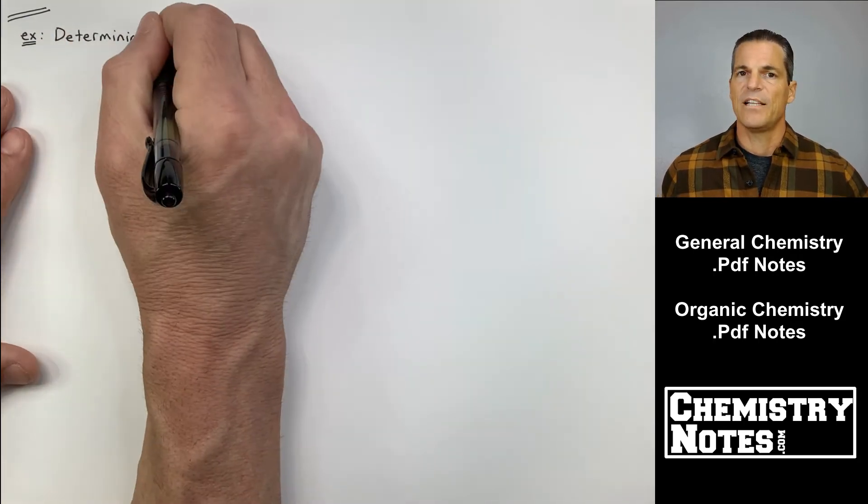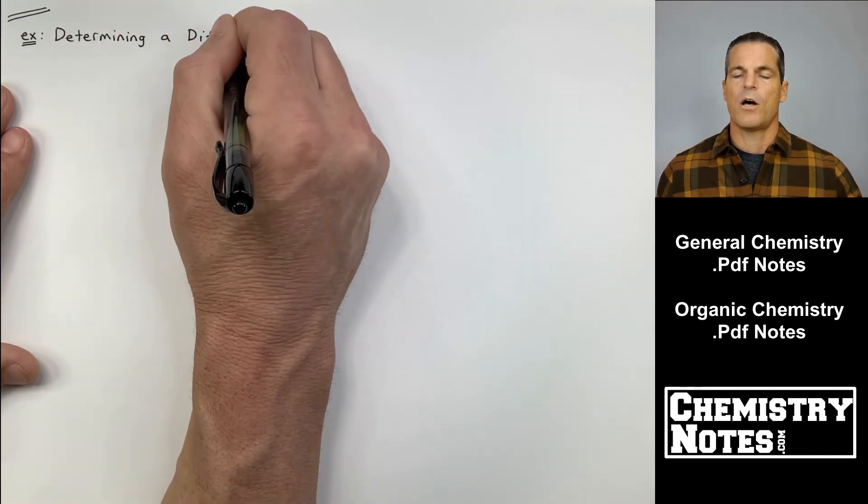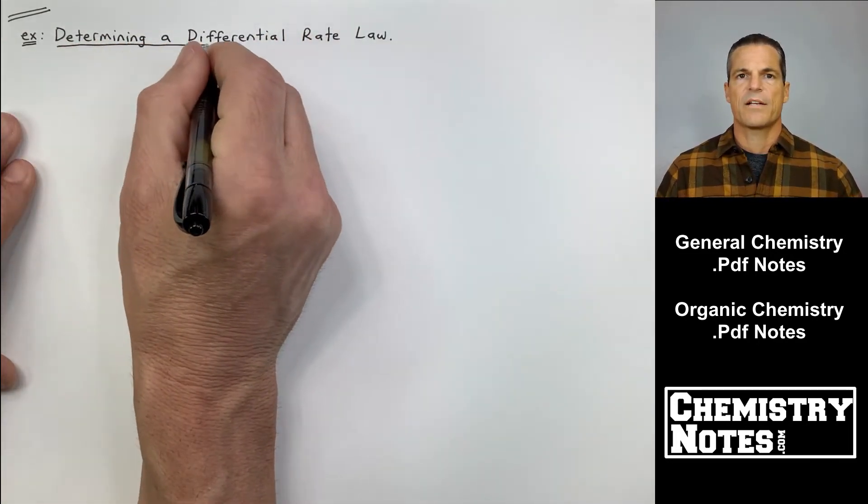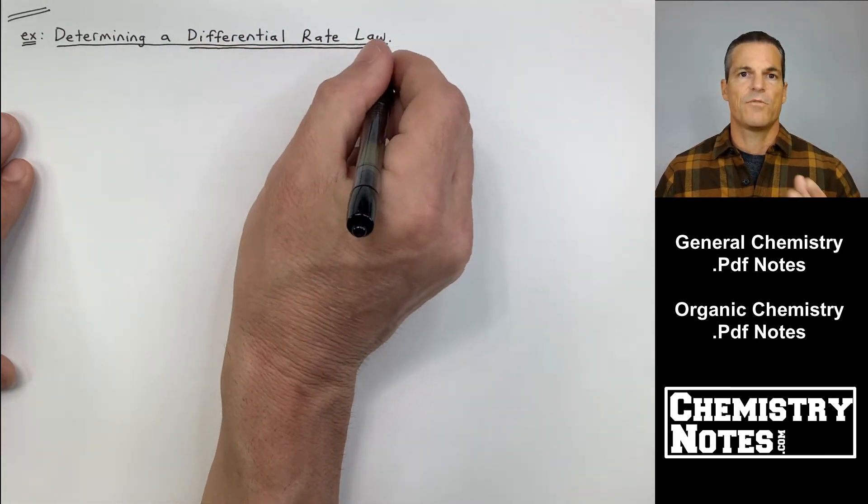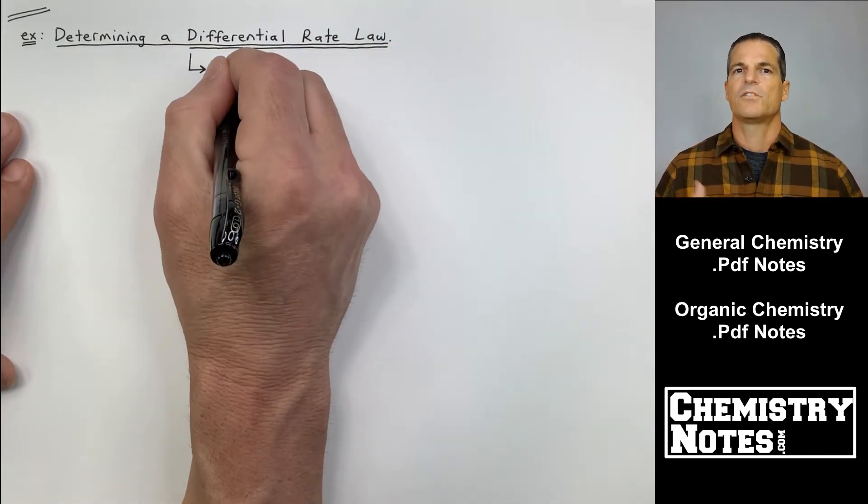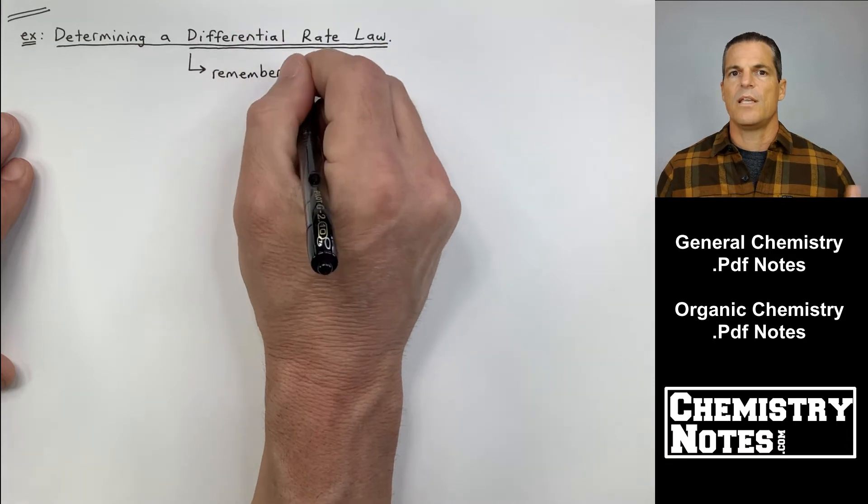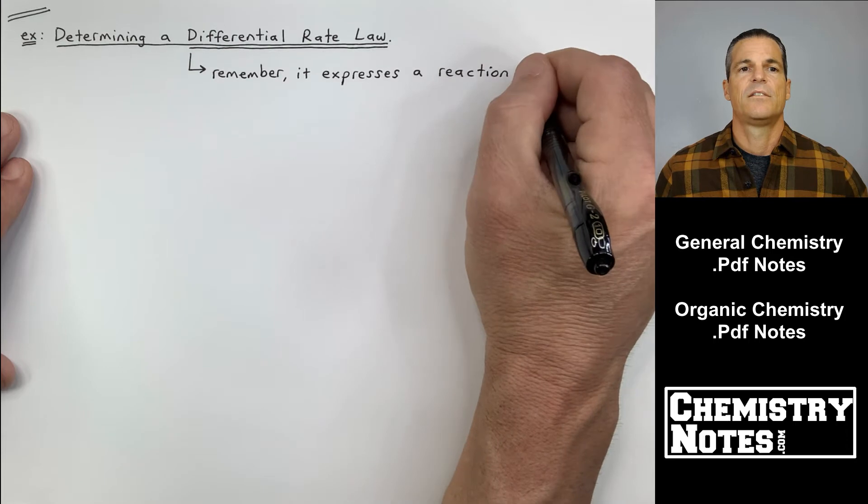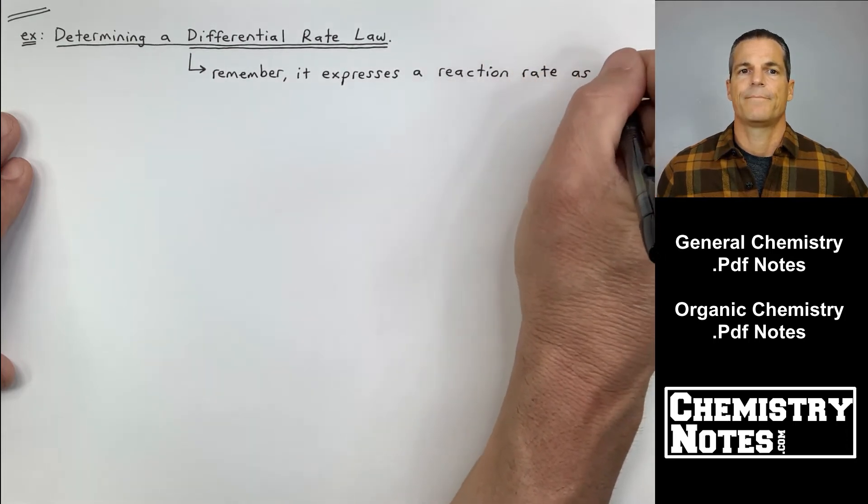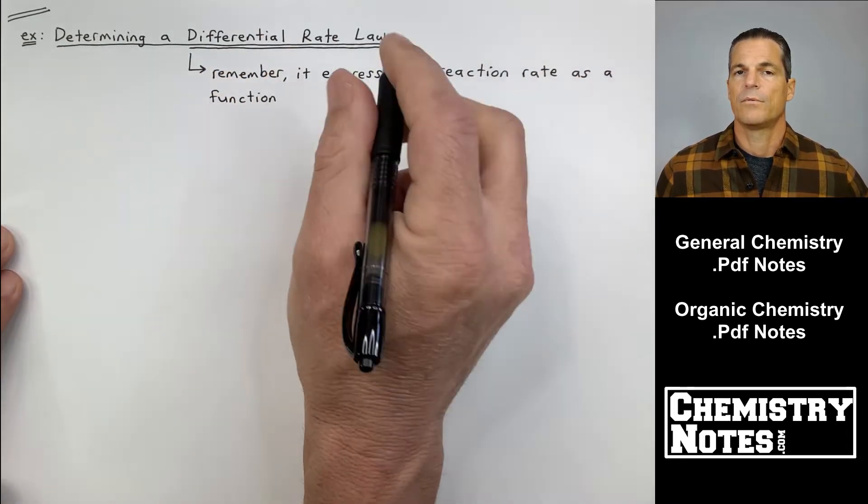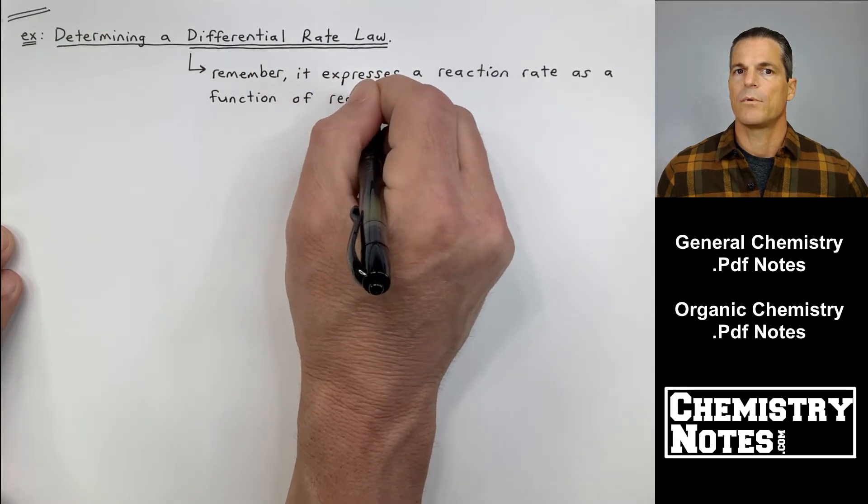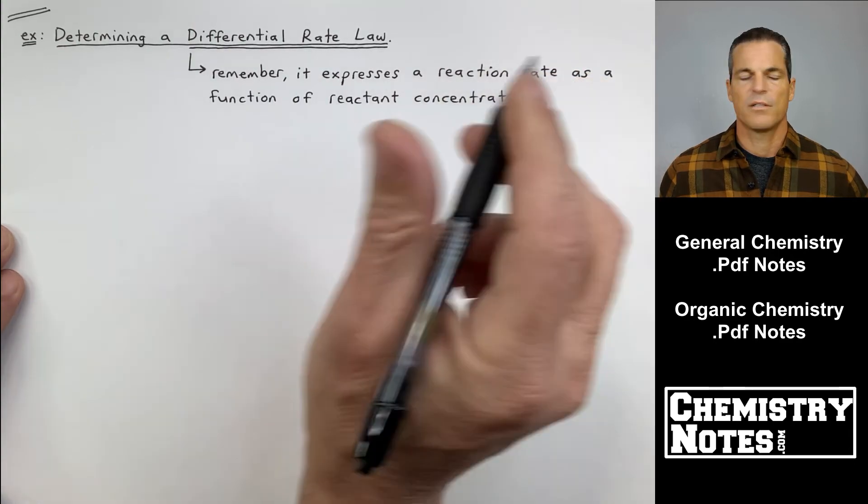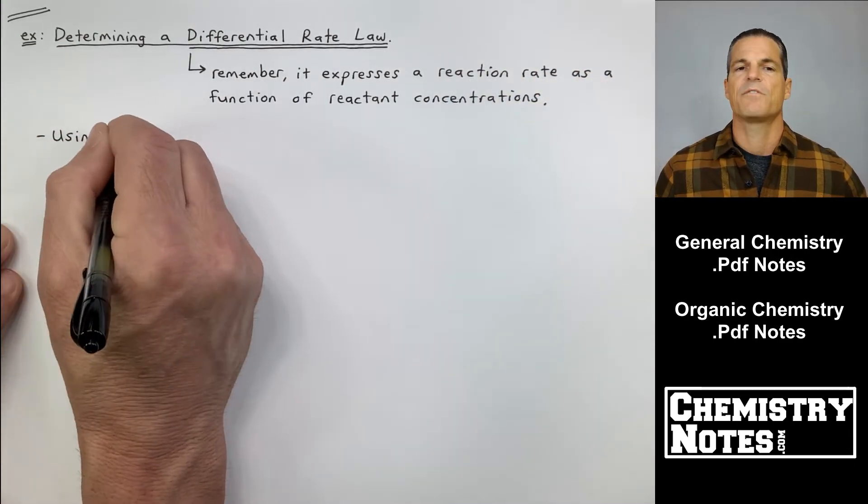Now, I purposely left that one as simple as solving for N, M, and K. I didn't talk about the overall order of the reaction, or the order with respect to NH4+ or NO2-. I'm going to slowly start to work that in as we go in more depth for differential rate law. Here is another example: determining a differential rate law. Remember, differential rate laws express reaction rates as a function of reactant concentrations. There's no mention of time here. That's for integrated rate laws.